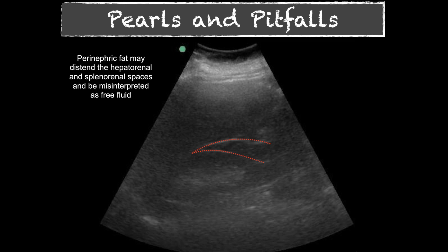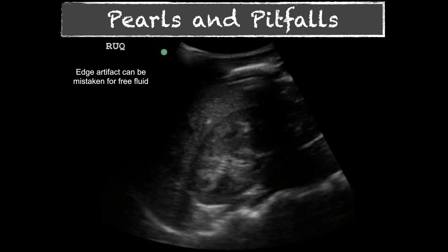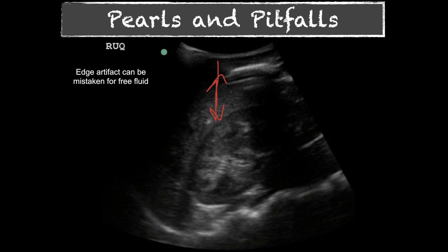Another thing often mistaken for free fluid is edge artifact. Because the kidney has a curved surface, some ultrasound beams are deflected away from the probe rather than returning to it, creating a dark area that can look like fluid. This is edge artifact and typically occurs at curved edges. You'll see it around kidneys on FAST or renal exams. That black stripe does not always mean fluid — you really need to ask whether it's edge artifact based on the angle and location.